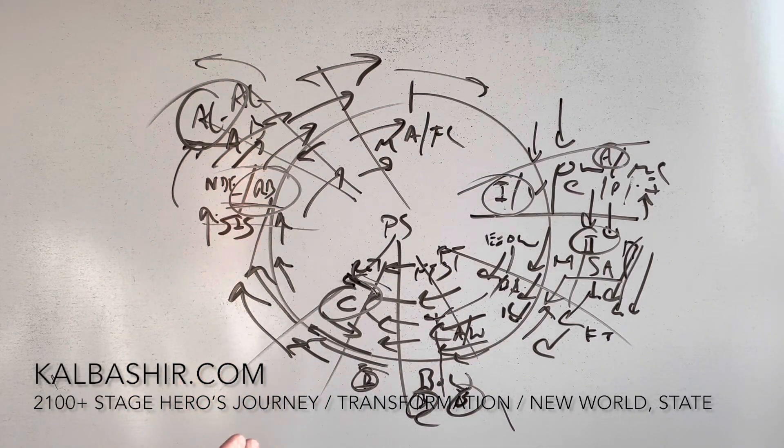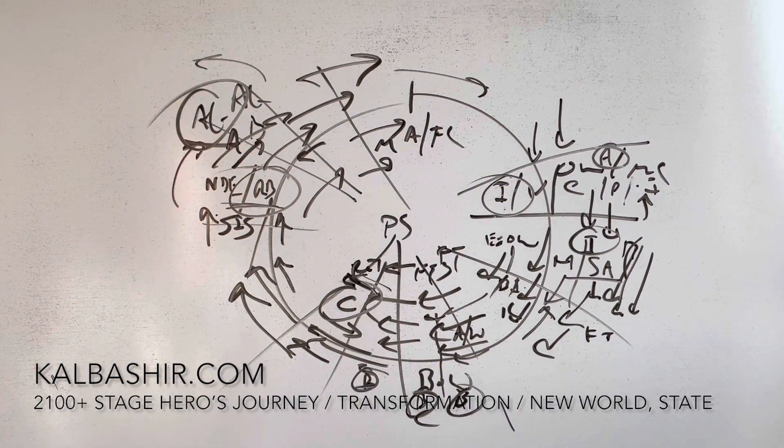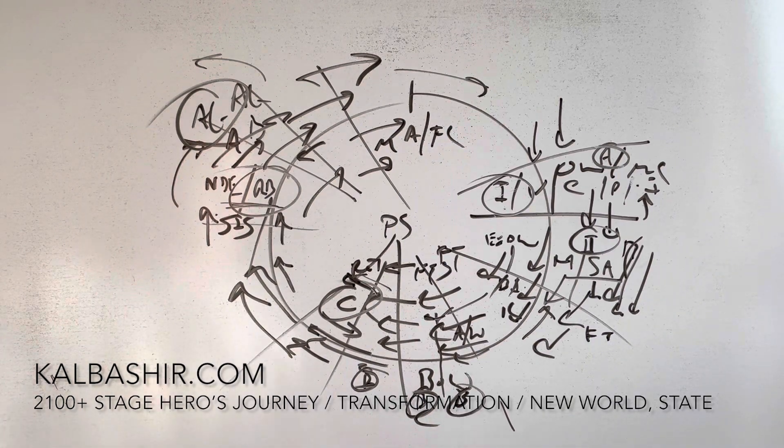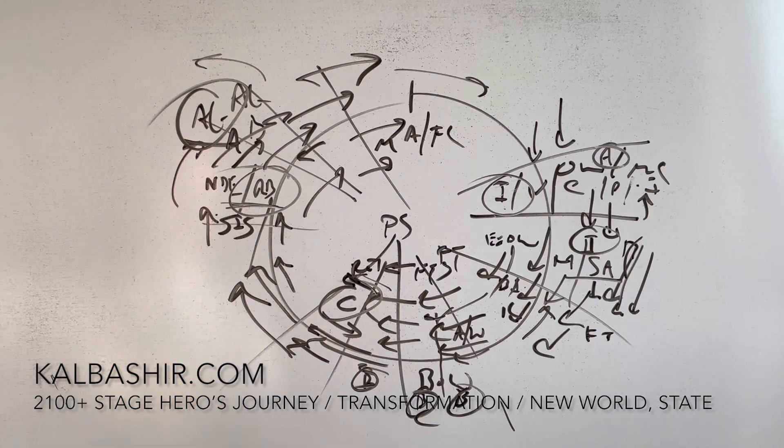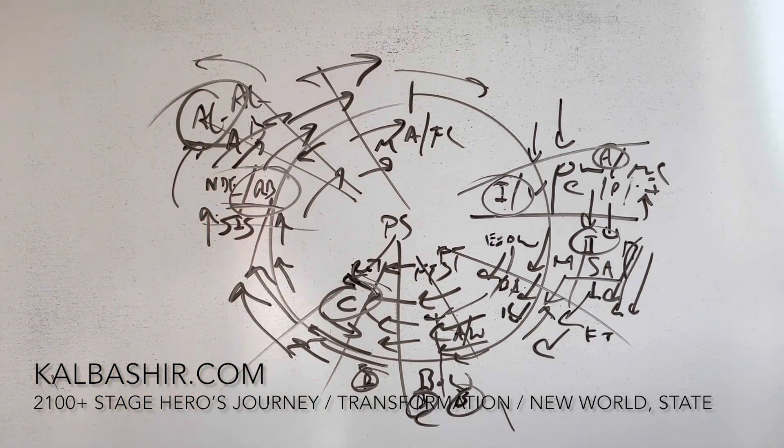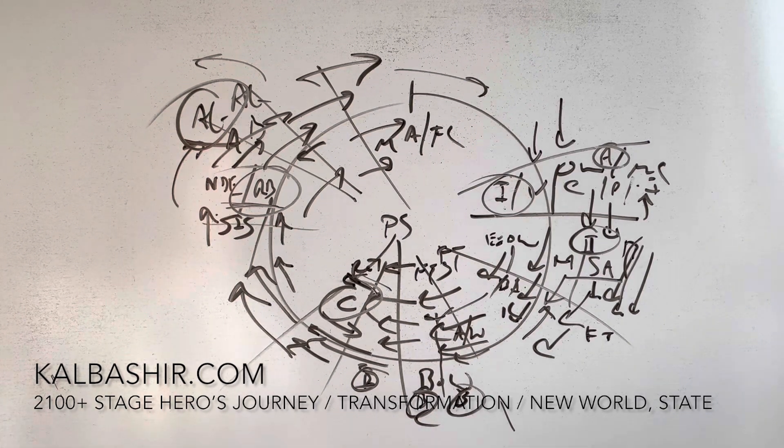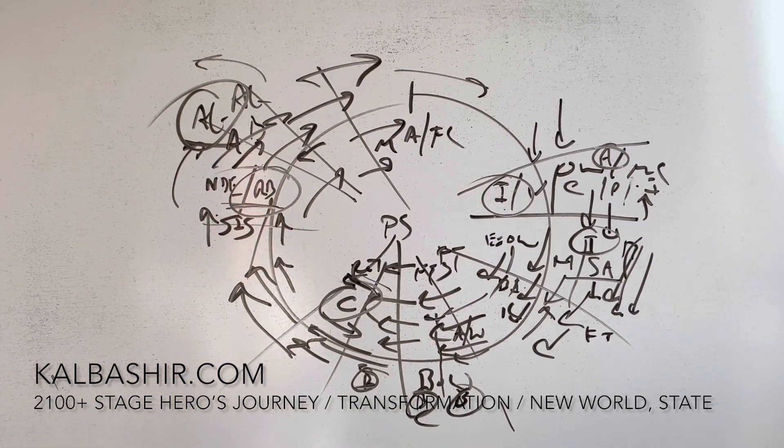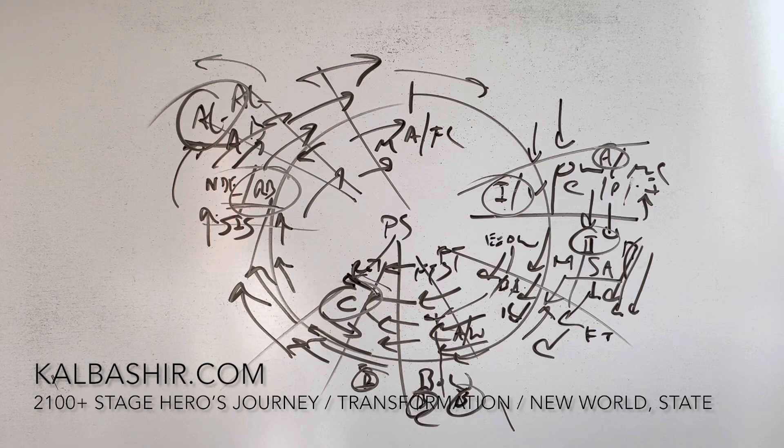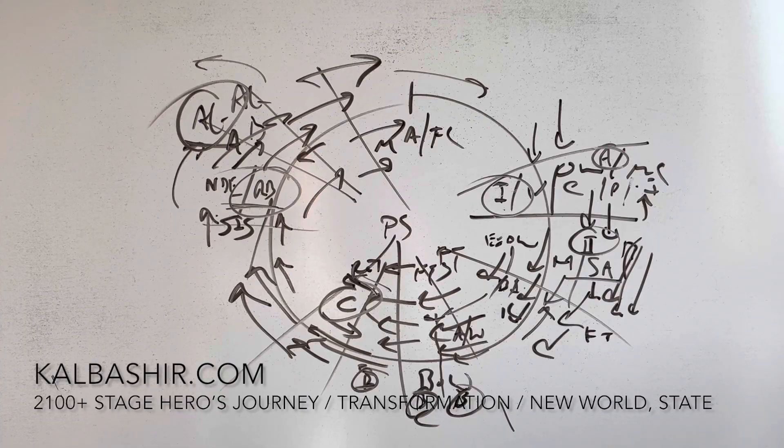If you want a detailed deconstruction of that story, you can order it off the website. Once again, this whole process is gone over in great detail in the 2100 Stage Hero's Journey Transformation Movement Through New Worlds and States, which you can purchase from the website. I also give one-to-one coaching sessions. I don't take on too many clients every year, but if you want a one-to-one coaching session, you can contact me via the website. That's a basic breakdown of an Academy Award nominee for best film for the Oscars 2023.